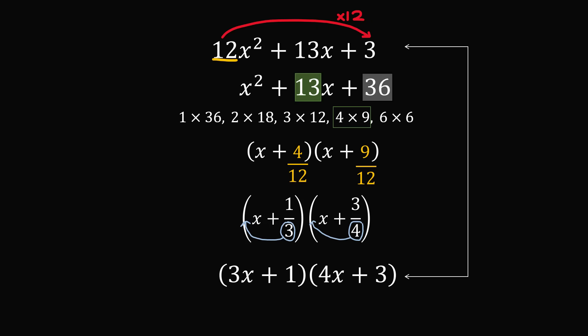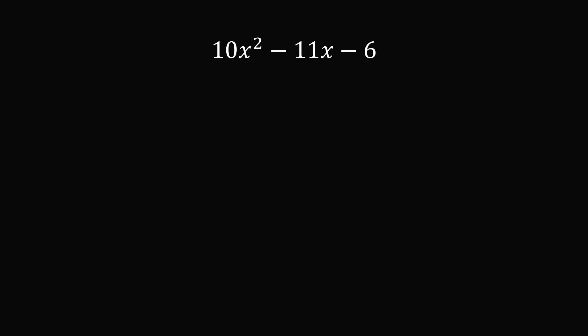Wow! Let's do another example. Let's factor 10x squared minus 11x minus 6. The coefficient on x squared is equal to 10, so let's slide it over to the constant term. So we have 6 times 10 which is equal to 60. We then analyze the new quadratic x squared minus 11x minus 60. The coefficient on x squared is equal to 1 and the constant coefficient is minus 60.